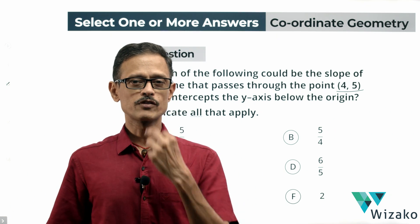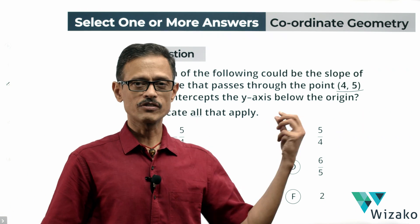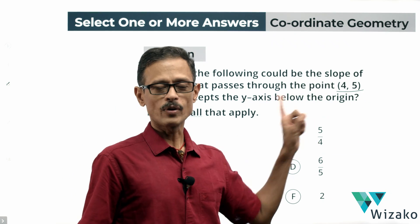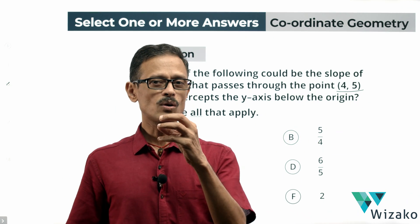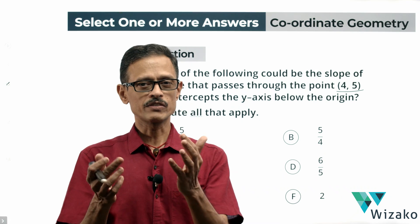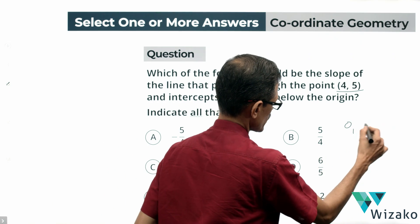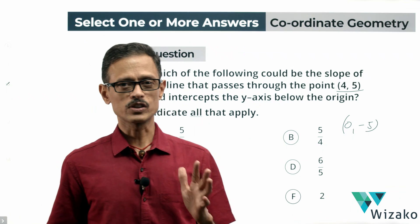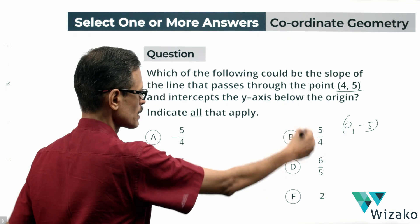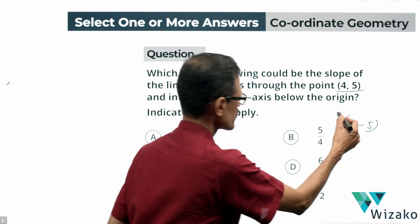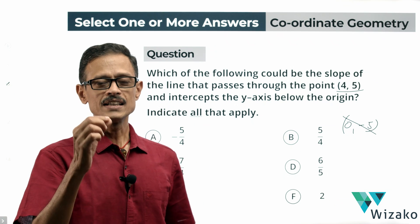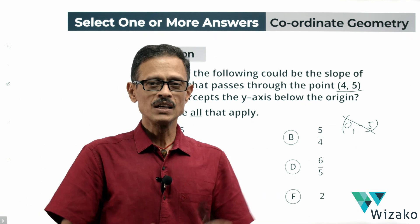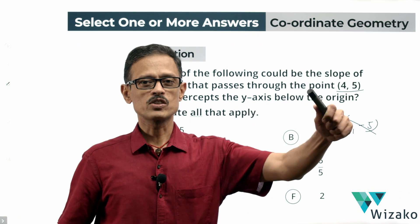Typically, if you know the coordinates of two points, you can find the slope using the formula. Here, we know the coordinates of one point but not the second point. If the second point had been something like (0, -5), we would have a single value for the slope. However, the second point is not given as a single point — they've said the line cuts the y-axis at a point below the origin, so infinite possibilities exist.